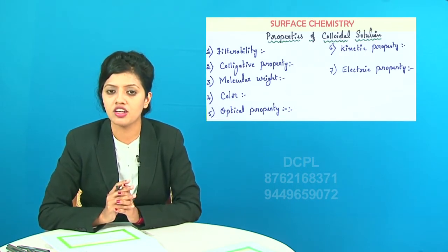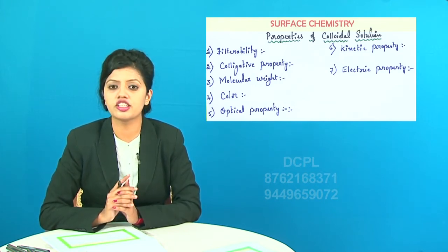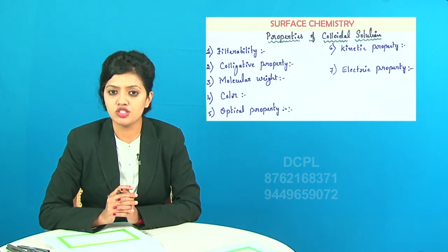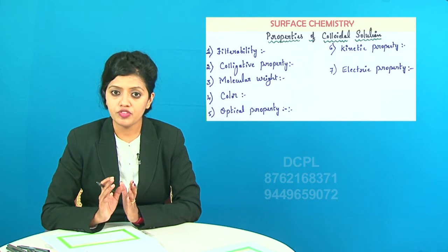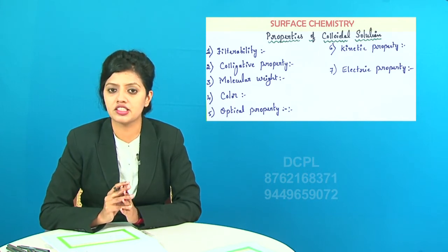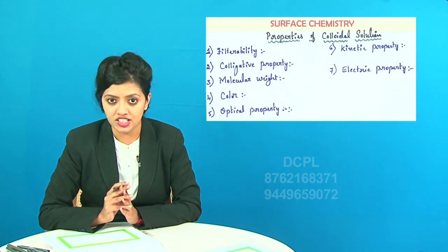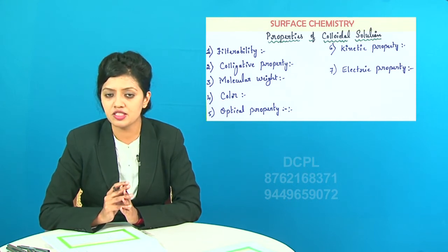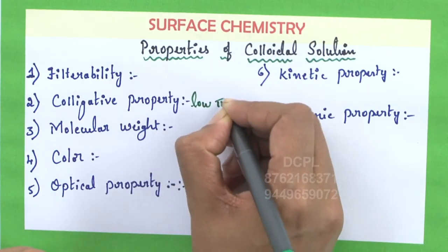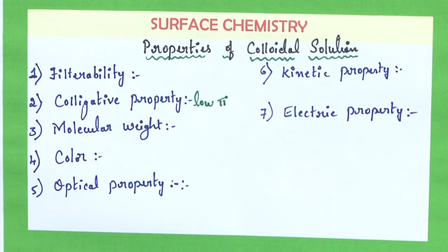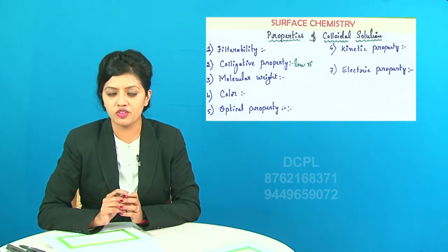Regarding colligative properties: since colloidal solution is an aggregation of many particles, the colligative property exhibited by the true solution is greater than that of colloidal solution, and hence colloidal solutions exhibit low osmotic pressure. Osmotic pressure is represented as π and is given as low pressure.